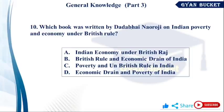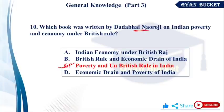Question number 10: Which book was written by Dadabhai Naoroji on Indian poverty and economy under British rule? Dadabhai Naoroji wrote 'Poverty and Un-British Rule in India.' The Drain of Wealth theory also came from Dadabhai Naoroji. Okay?